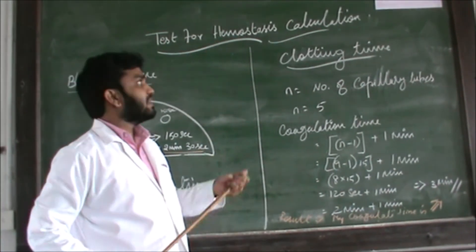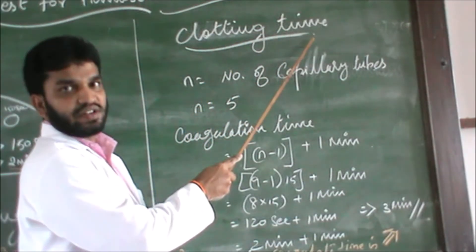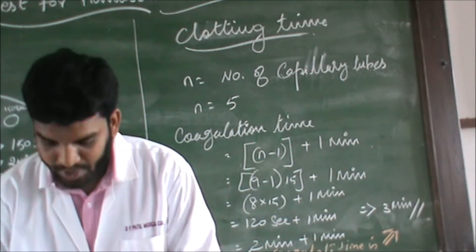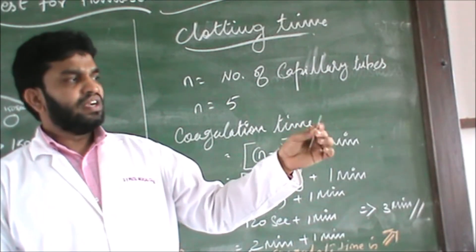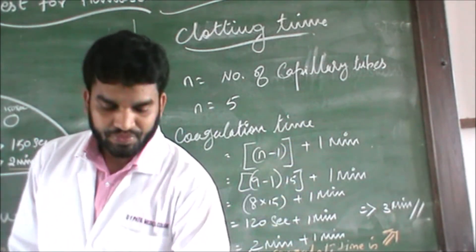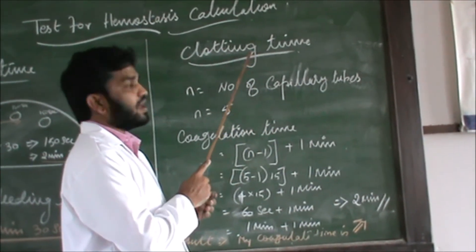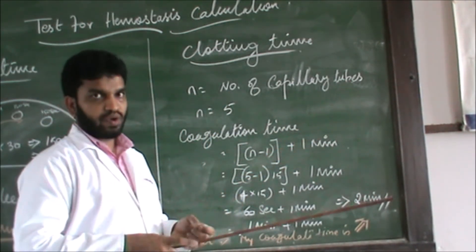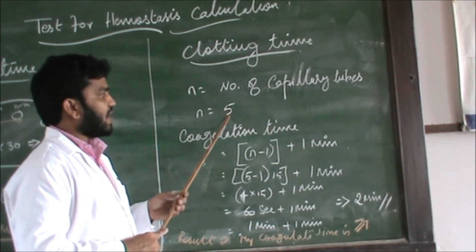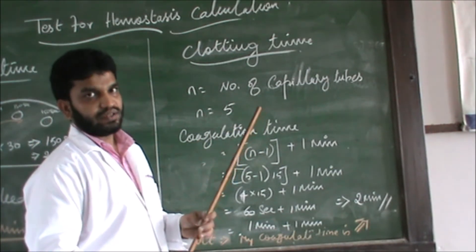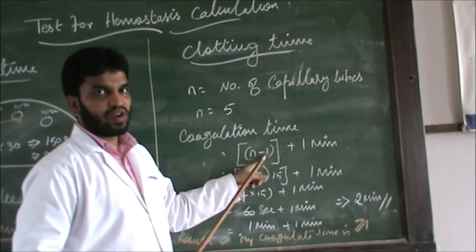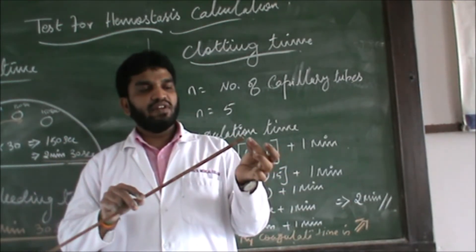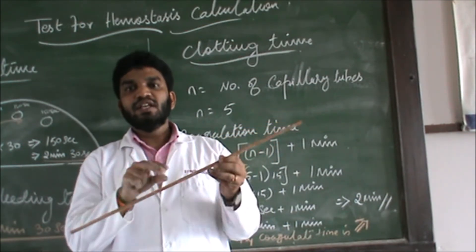Now I am going to show the calculation part of this practical — clotting time calculation. Remember: the capillary tube used here is 1 mm pore size and 10 cm long. The formula uses n, where n is the number of capillary tube pieces broken. In this practical we got five pieces, so n equals five. The coagulation time formula is: (n minus 1) multiplied by 15 seconds, plus 1 minute. The minus one accounts for the time taken to fill the capillary tube.